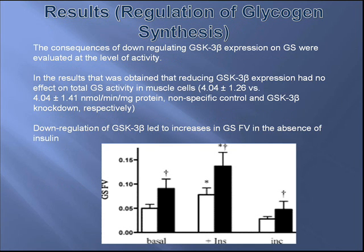The first result is regulation of glycogen synthesis. The consequences of down-regulating GSK3 beta expression on glycogen synthase (GS) were evaluated at the level of activity. Activities measured in the presence of a maximal concentration of the allosteric regulator glucose-6-phosphate are independent of the phosphorylation state of glycogen synthase and can serve as a surrogate for the total amount of glycogen synthase.